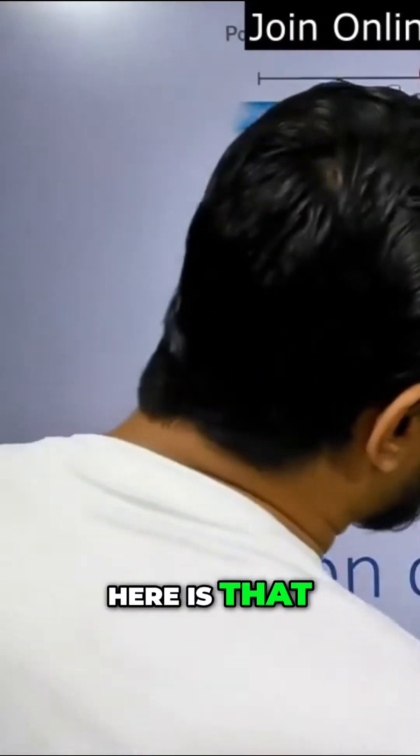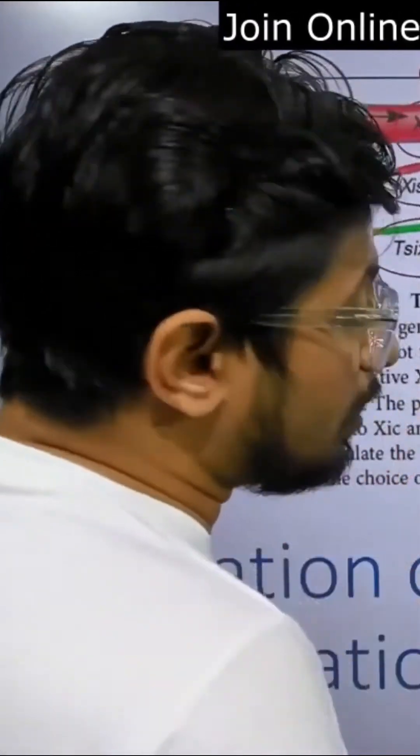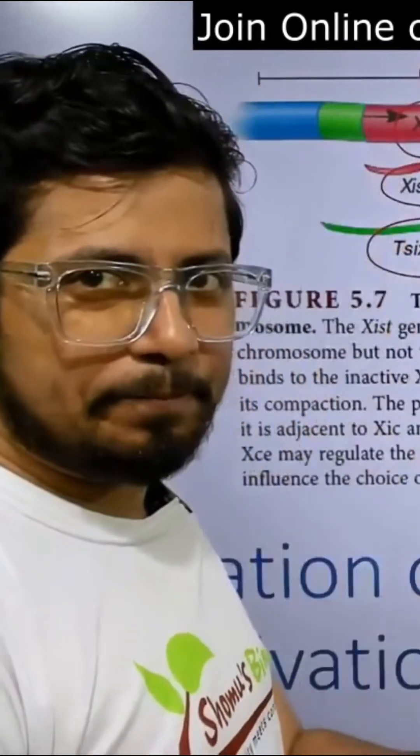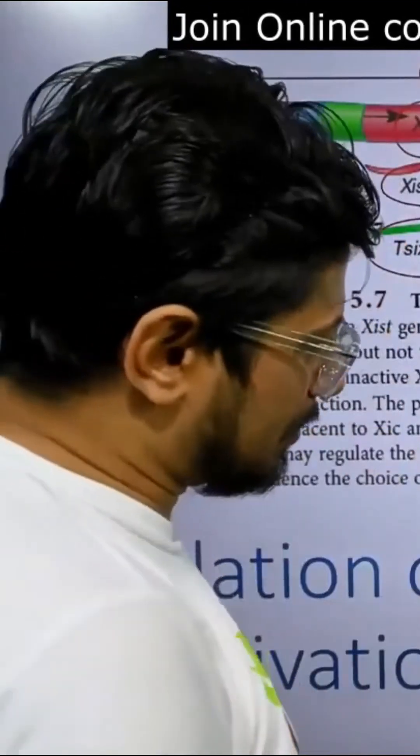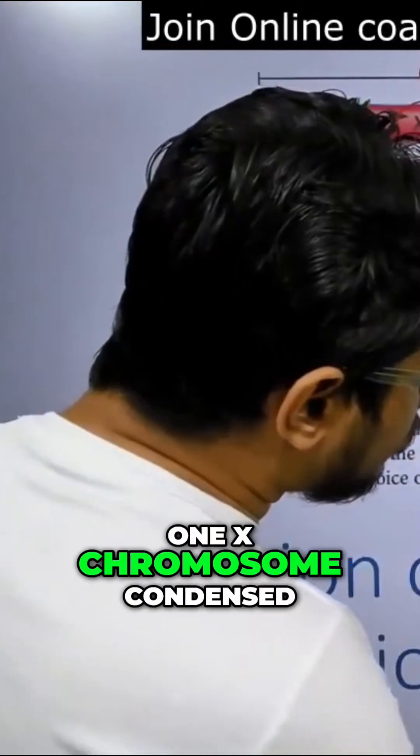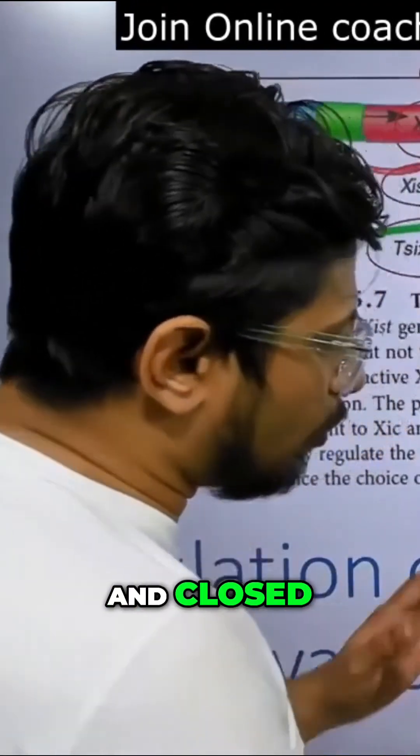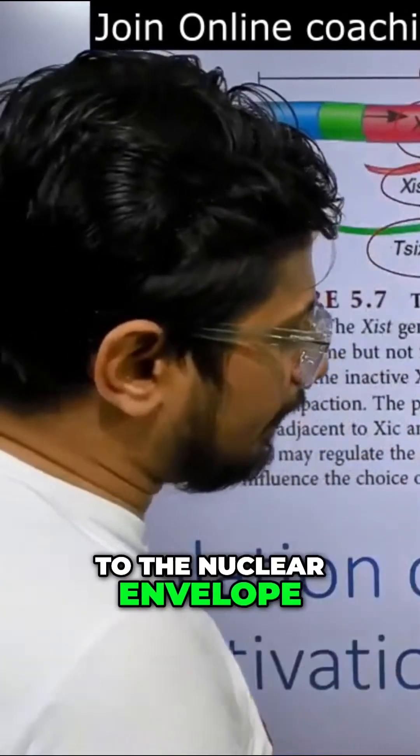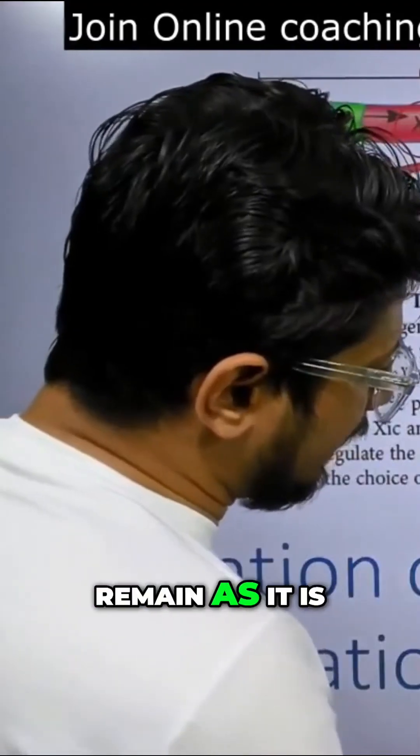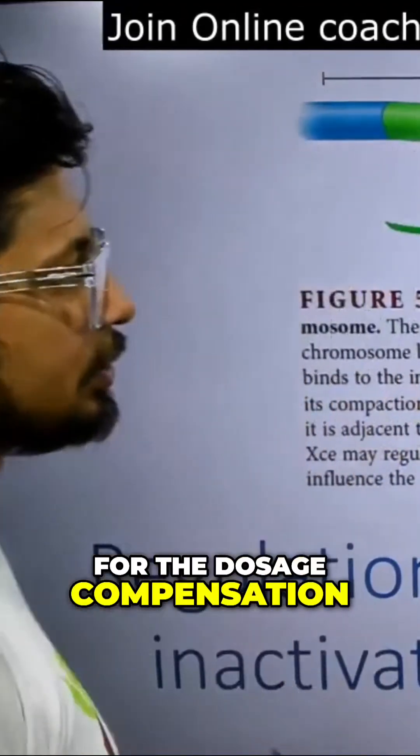And what you have here is that in the nucleus of female organisms, one X chromosome is condensed and close to the nuclear envelope, the other X chromosome remains as it is for dosage compensation purpose.